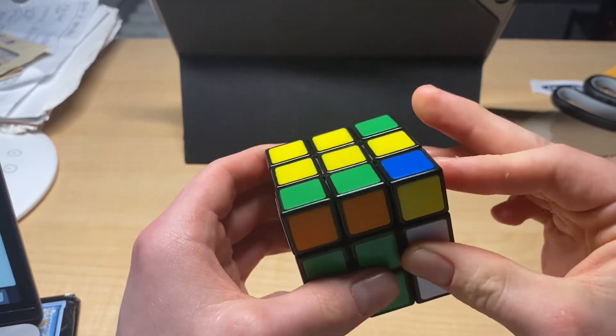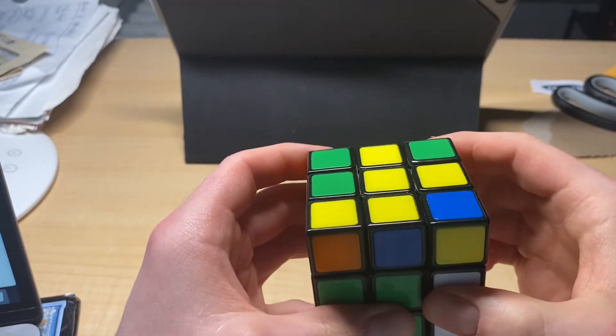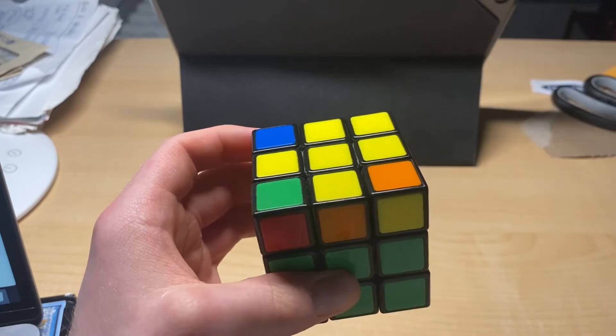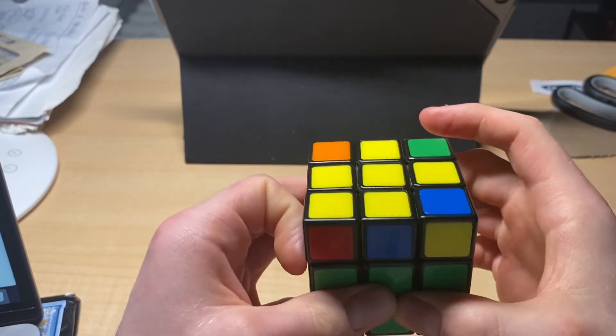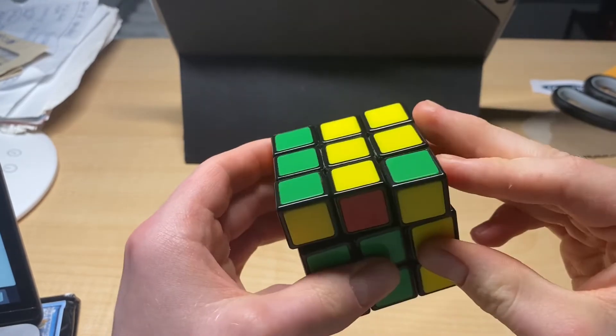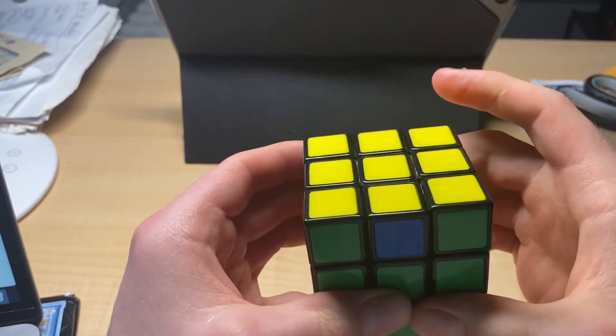We bring it to here and we do it again. R, U, R prime, U, R, U2, R prime. Then, remember, it's a U2 in here. U2. Then, it's an R, a U, an R prime, a U, an R, a U2, an R prime.